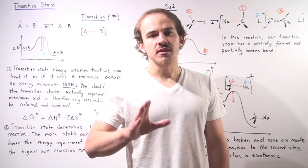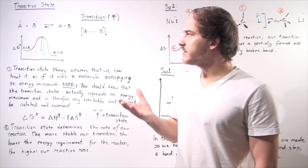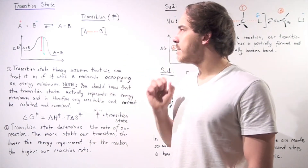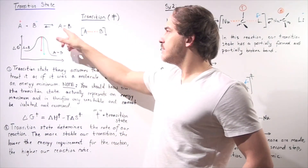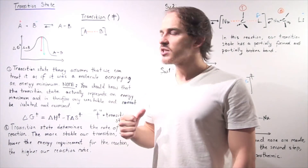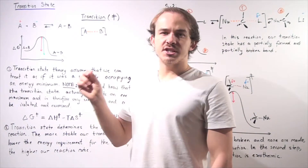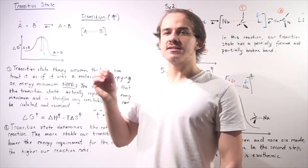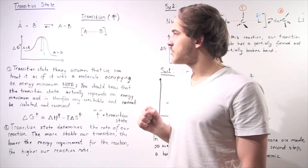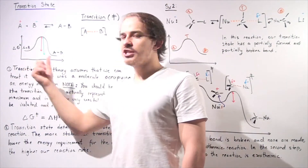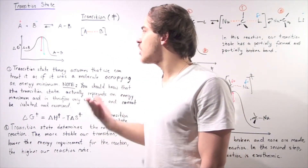In this lecture, we're going to focus on the transition state of a reaction. Let's begin by looking at a reaction with a one-step mechanism, in which our two reactants A and B form a bond between them to give one product. Let's describe the energy diagram for this reaction, assuming it is an exothermic, exergonic reaction. The y-axis is change in Gibbs free energy under standard state conditions, and the x-axis is reaction progress.